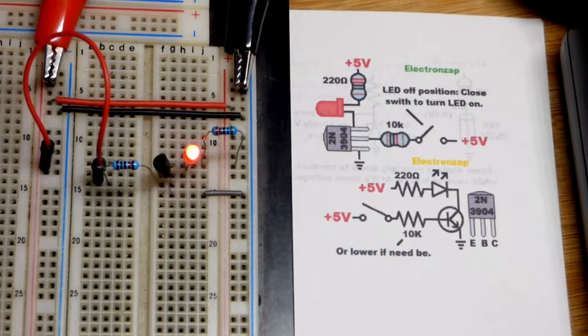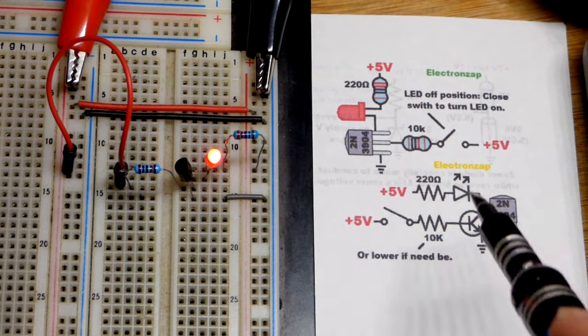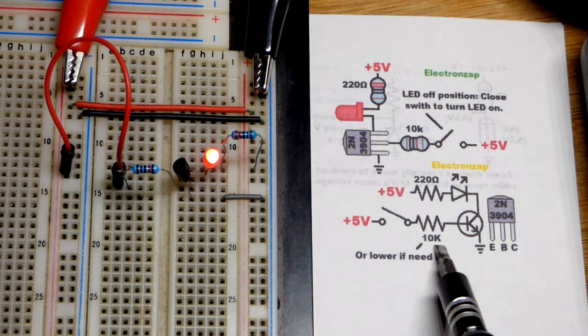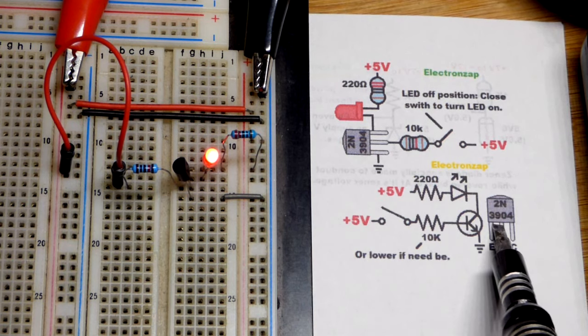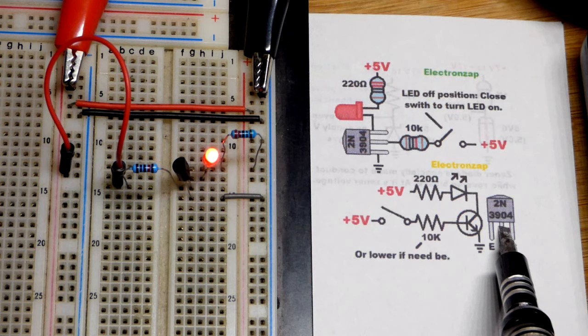That current determines whether the transistor is on or off. The bipolar junction transistor whether it's NPN or PNP - PNP works the same but polarities would be opposite. Current flows the opposite direction through them. And so we're just gonna keep on the NPN though. Just realize PNP is the same just the opposite.